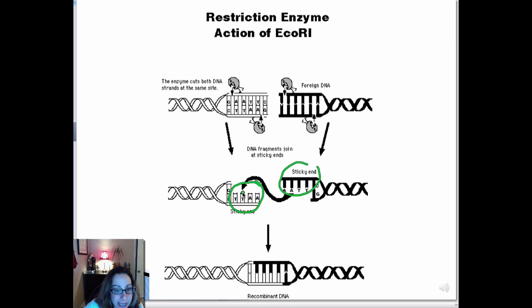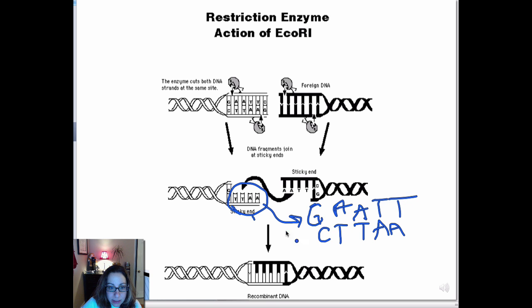And these sticky ends, so you have here the CTTAA hanging out over here. And if there's another piece of DNA in close proximity that has the appropriate complementary sequences and the correct overhang, it is going to combine. So we have AATT, and it would just combine together and generate recombinant DNA.